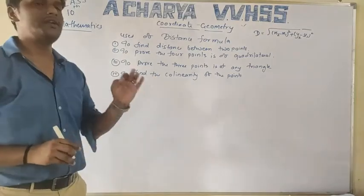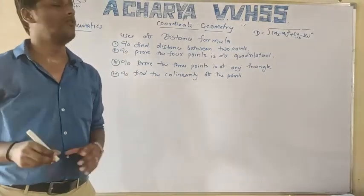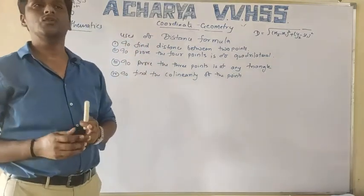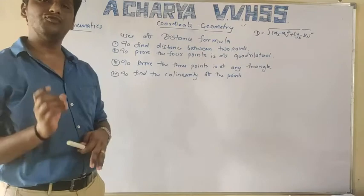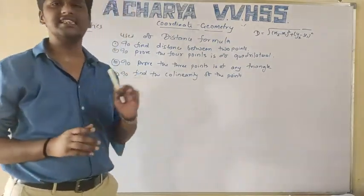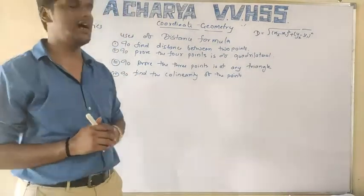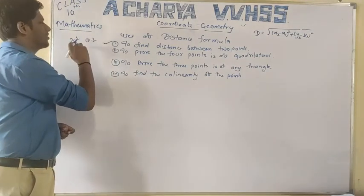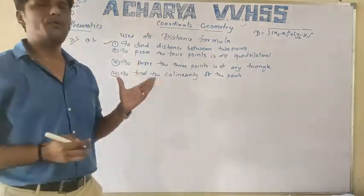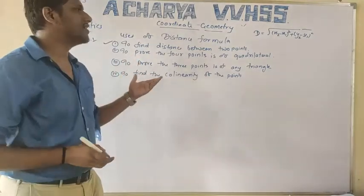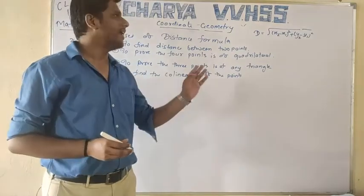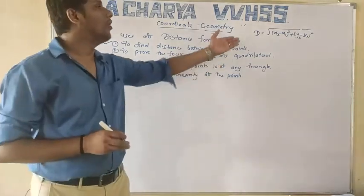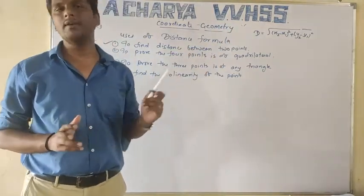The first use, which I have told you and given as homework: the distance formula is used to find the distance between two points. If you have two points and need to find their coordinates, we use the distance formula. This is Exercise 7.1, Question number 1 — given two points A (x1, y1) and B (x2, y2), apply the formula and you will get the distance.